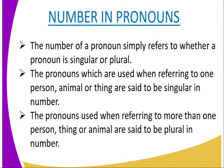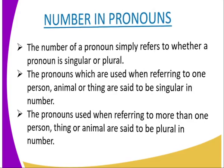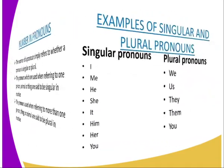The number of pronouns refers to whether a pronoun is singular or plural. Pronouns used when referring to a single person, animal, or thing are said to be singular in number. When they refer to more than one person, thing, or animal, we say they are plural in number.